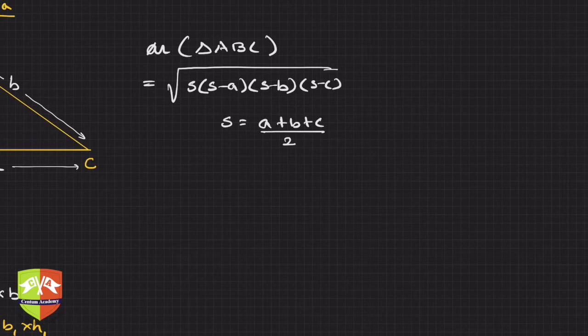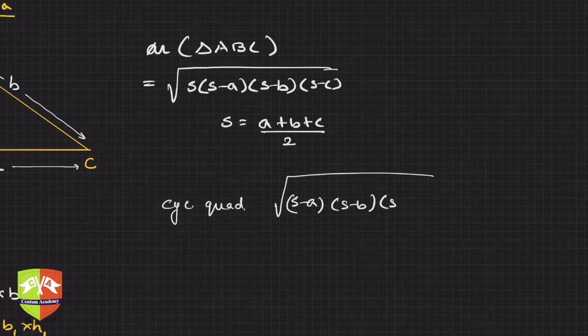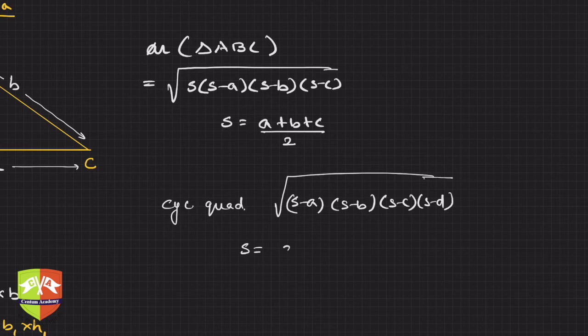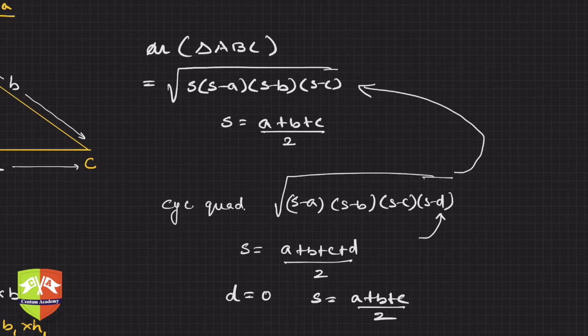For a cyclic quadrilateral, the formula was square root of (s-a)(s-b)(s-c)(s-d), and s was (a+b+c+d)/2. If you put d equals 0, s will become (a+b+c)/2, and if you put d equal to 0 here as well, it will be reduced to just s, and you will eventually get this formula. This is Heron's formula.